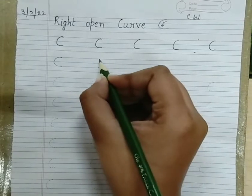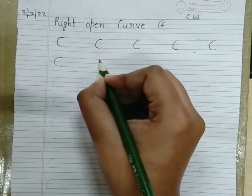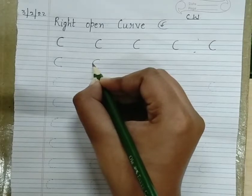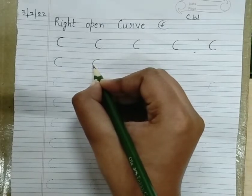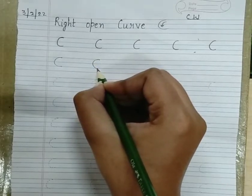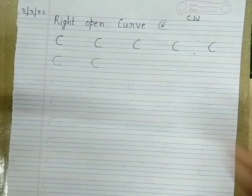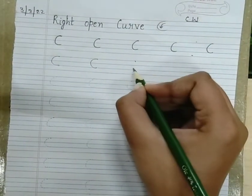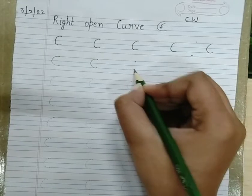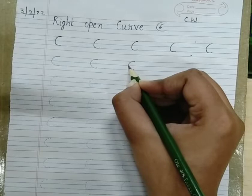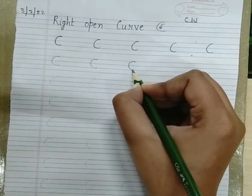Two dots. Now put your pencil at the top and slowly, slowly take it downwards and take it to the bottom like this. Again, two dots — put your pencil at the top and now take it to the bottom.